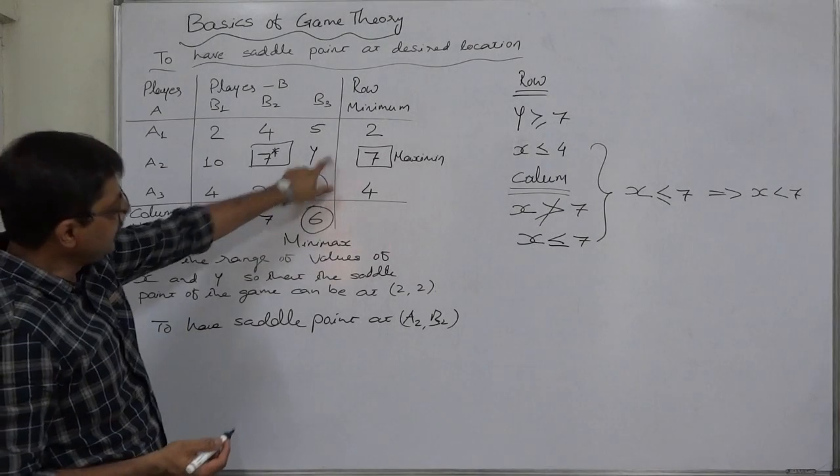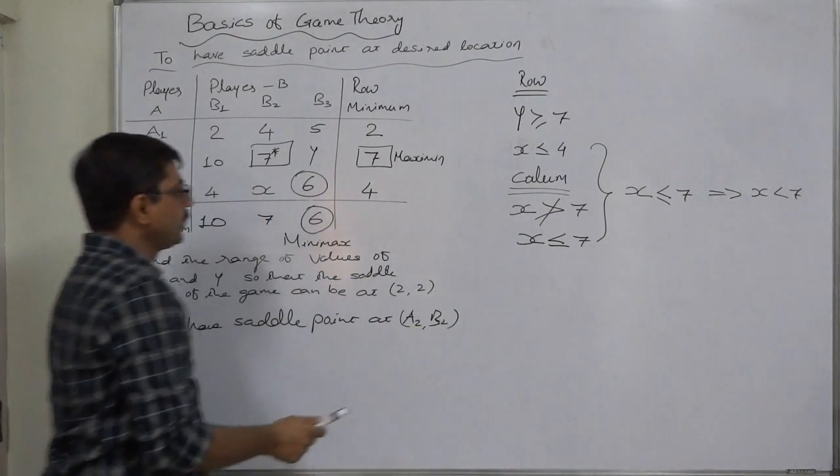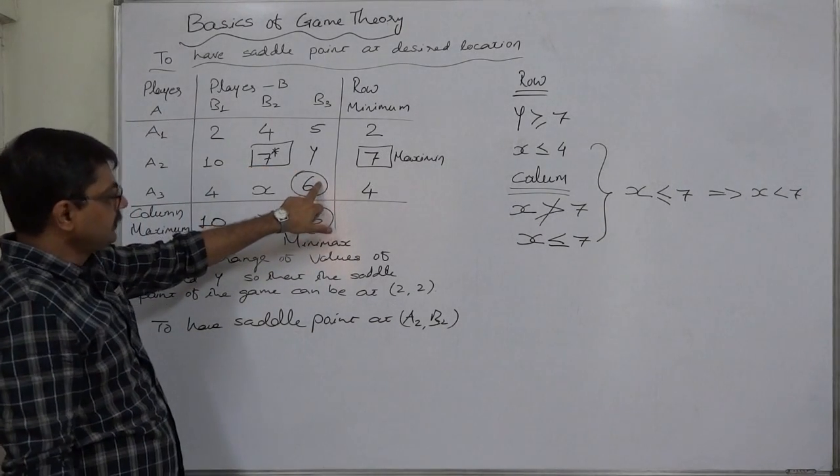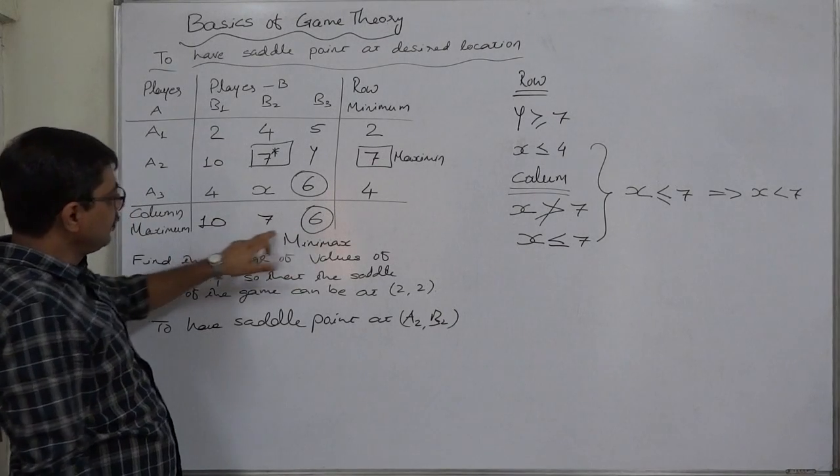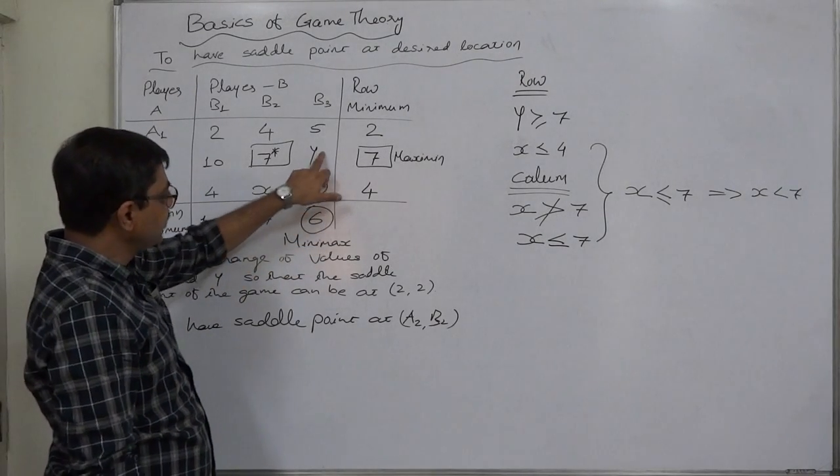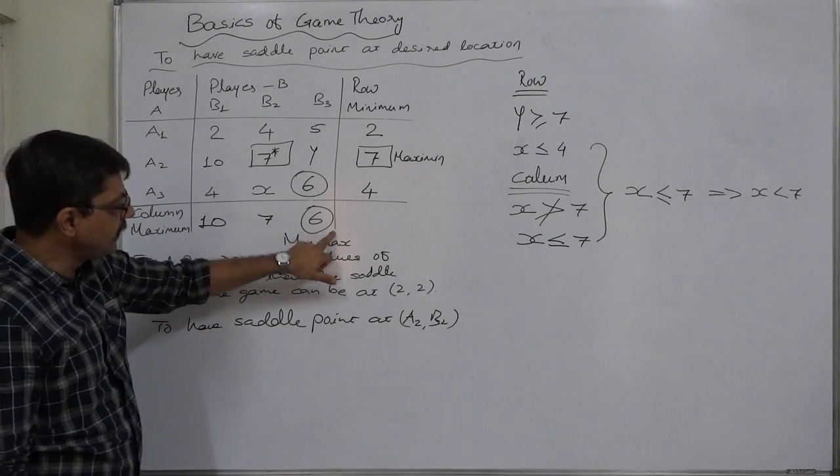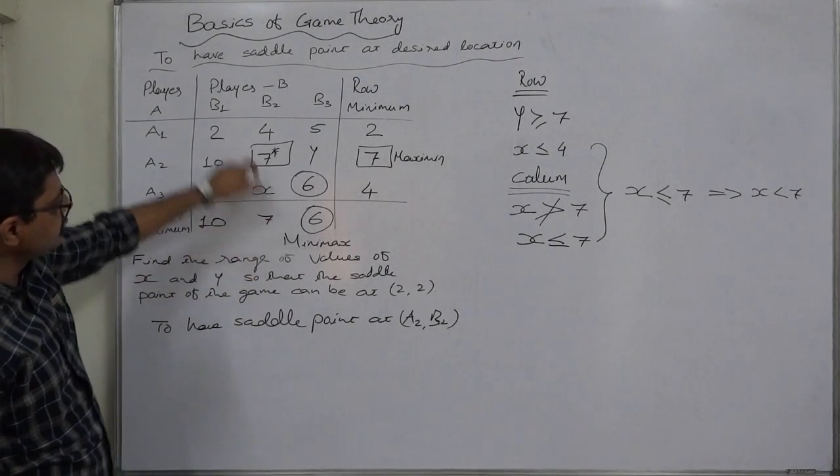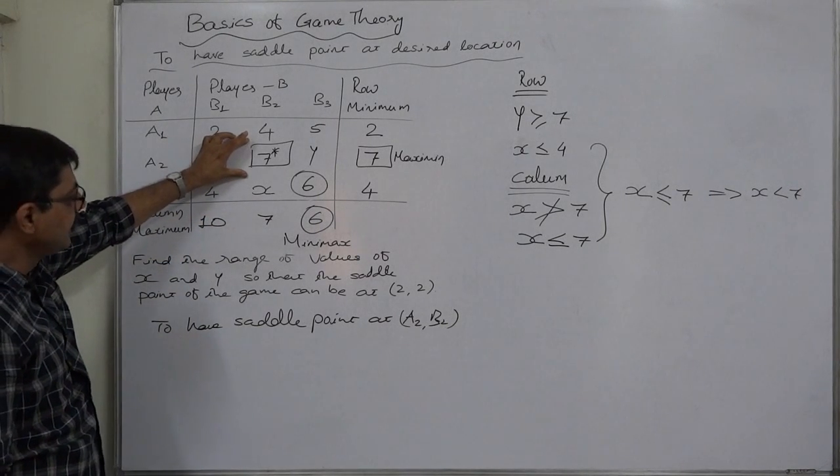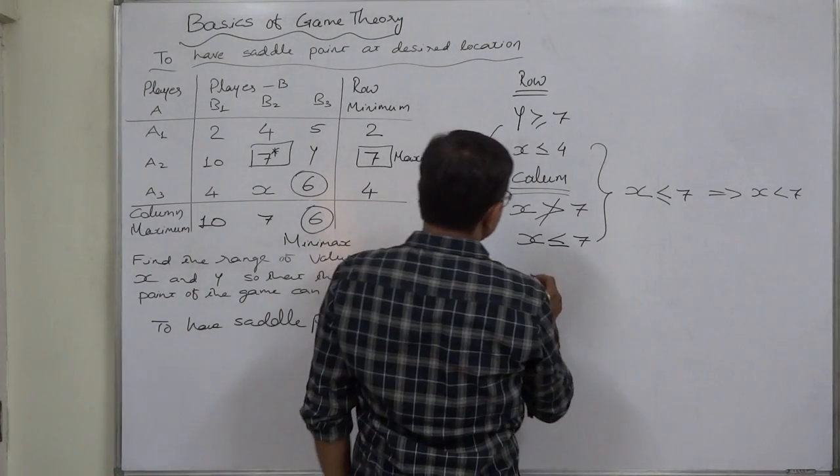Now what about the third column B3? What about y in the columnar form? Here we have concluded that if y takes value greater than or equal to seven, let us assume that y takes value greater than or equal to seven, say it is eight. It will come here: ten, seven, and eight, out of which seven will become the minimax value. Even if y takes value seven, that seven will be here. There will be two seven values, and seven will be minimax value, out of which this will be the common maximin and minimax. And ultimately we can say that the saddle point will be at A2 B2. So this conclusion of row is also applicable to column.